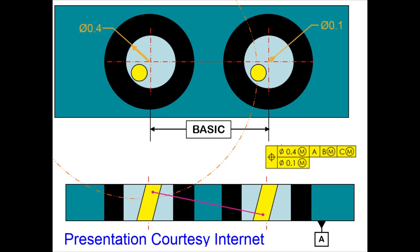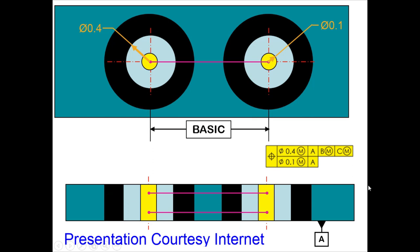This is about a composite position with first level having three datums and second level without a datum. Without a datum tells that we can control the relationship between the hole positions.